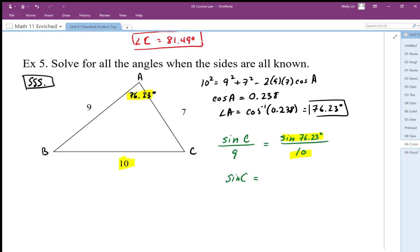Okay, so I'm getting sine C is 0.874. Okay, so angle C, I need to use arc sine.